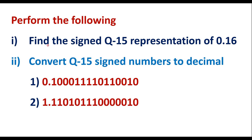Perform the following: find the signed Q15 representation of 0.16, and convert Q15 signed numbers to decimal. Here, two Q15 representation numbers are given which we are supposed to convert into decimal, and here we are supposed to find the signed Q15 representation of the decimal number 0.16.